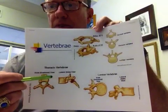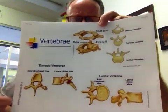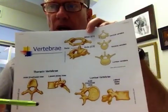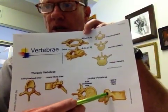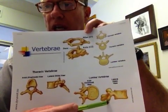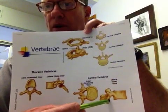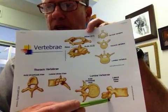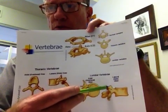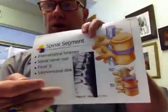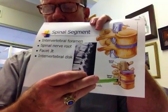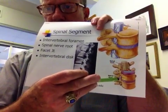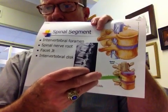Here are the features of the lumbar and thoracic vertebrae. Here's the transverse process, here's the spinous process. Each vertebra has articular processes left and right — two inferior and two superior. Where these articulate forms the facet joints. The superior articular process on this side articulates with the inferior articular process of the vertebra above it, forming the facet joint.